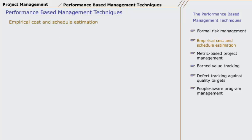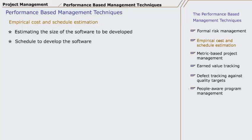Empirical cost and schedule estimation involves estimating the size of the software to be developed, the procedure to be used to develop the software, and preparing a schedule to develop the software. Cost will be easily calculated if the size of the software to be developed is known and a proper schedule is developed.